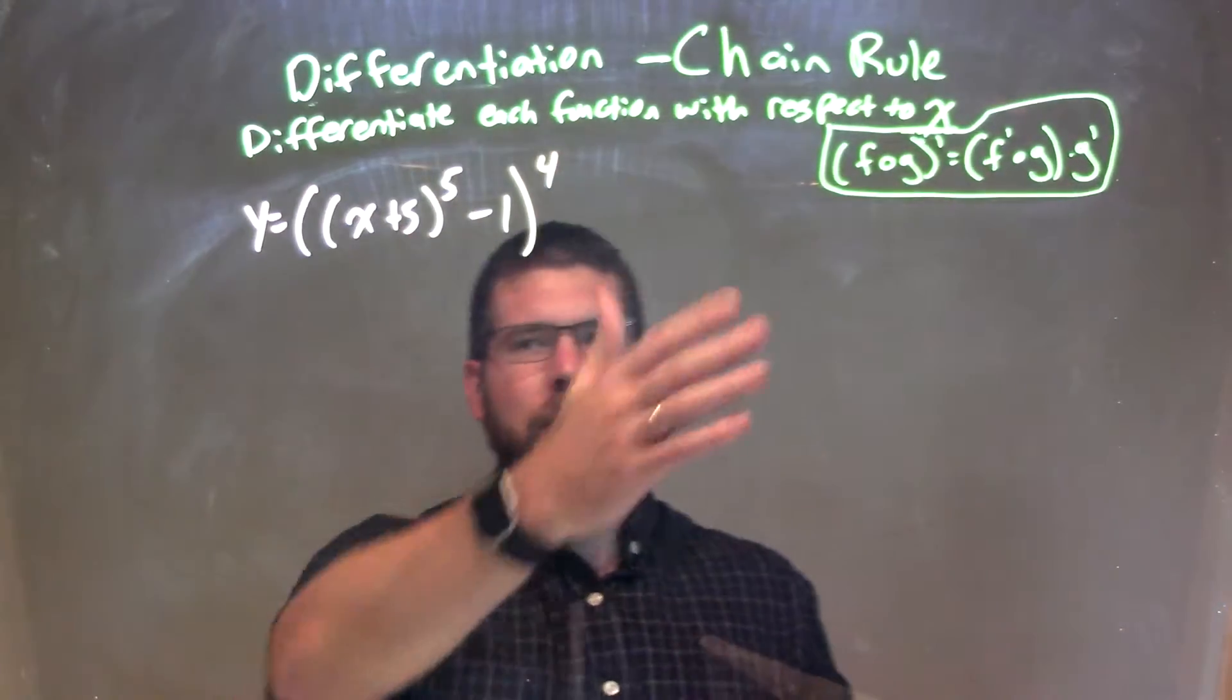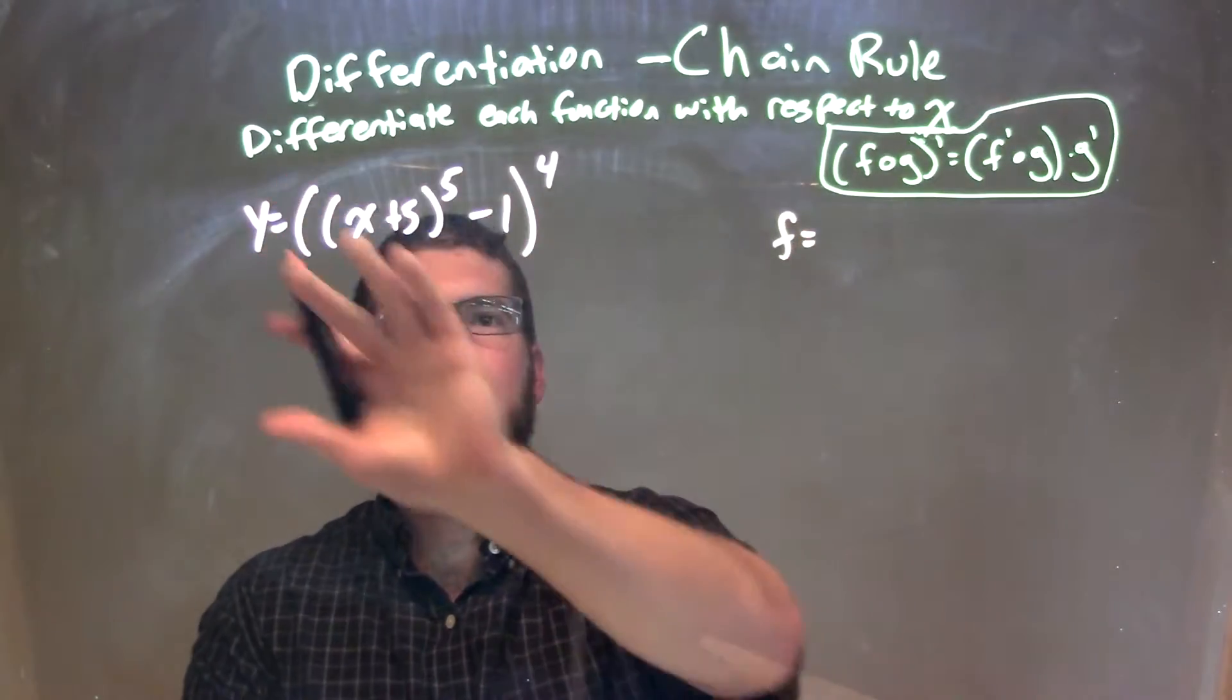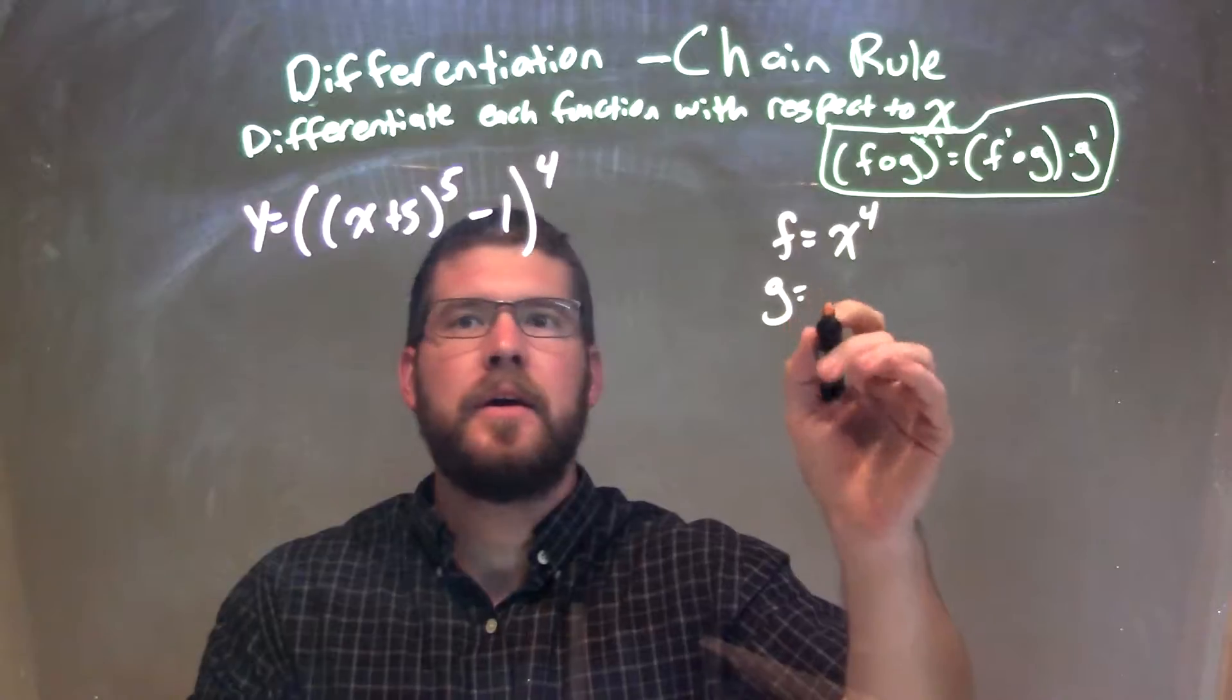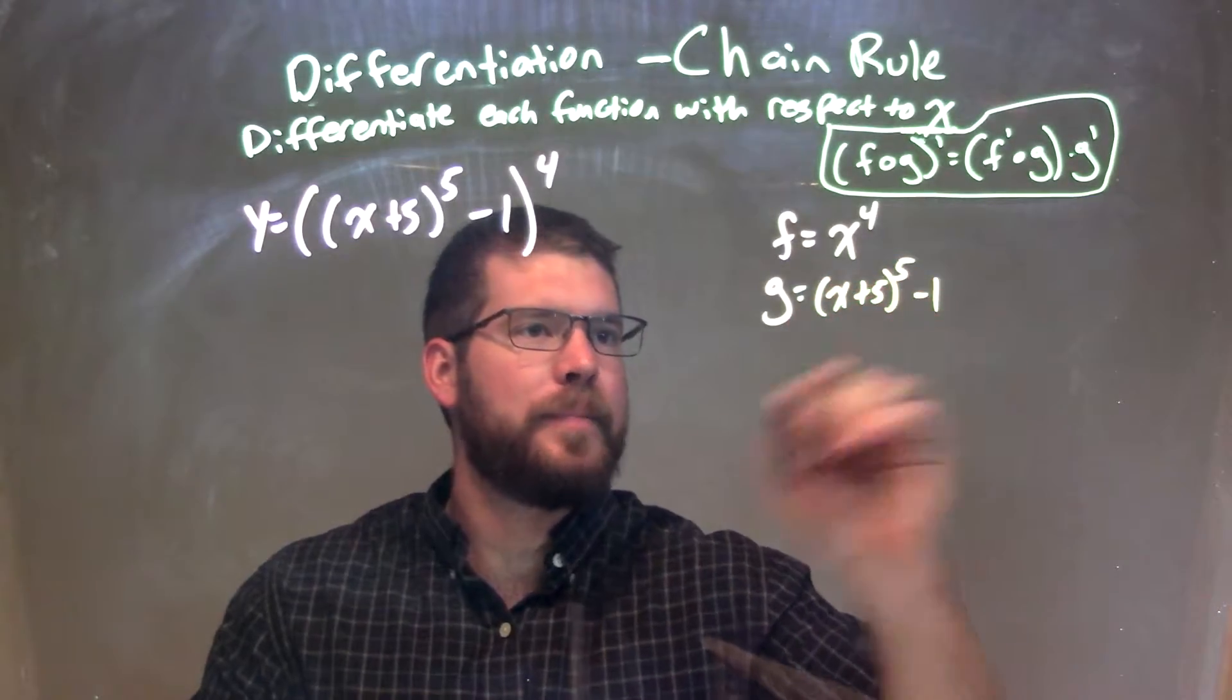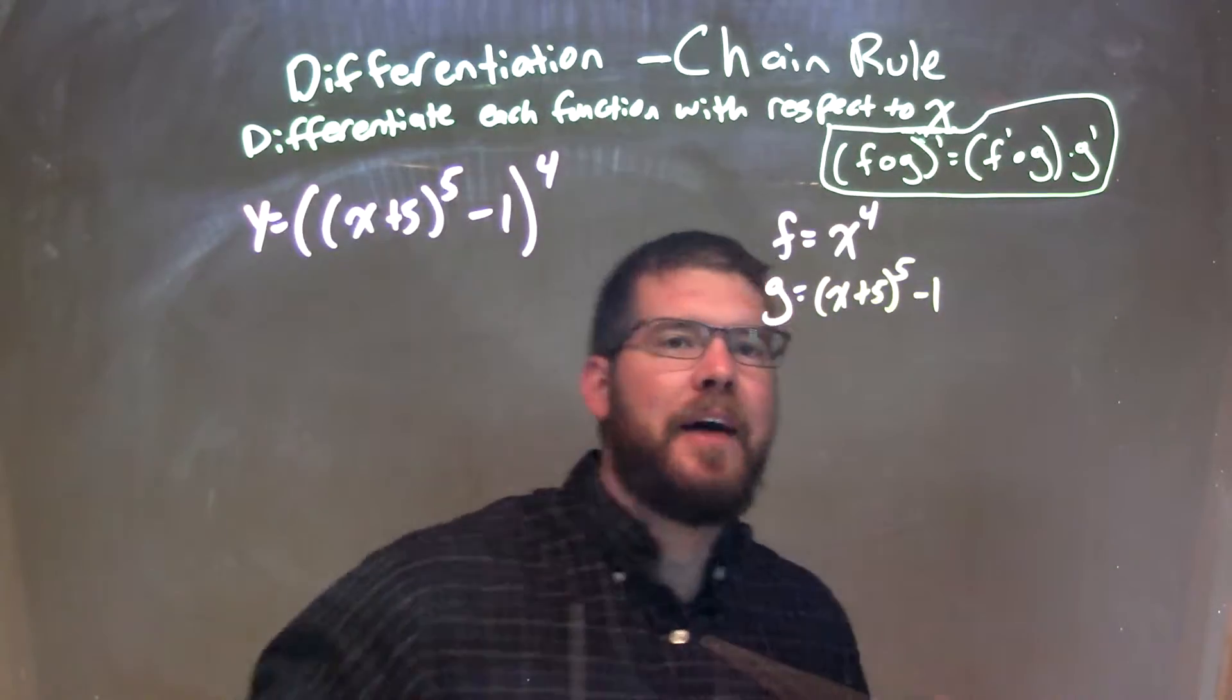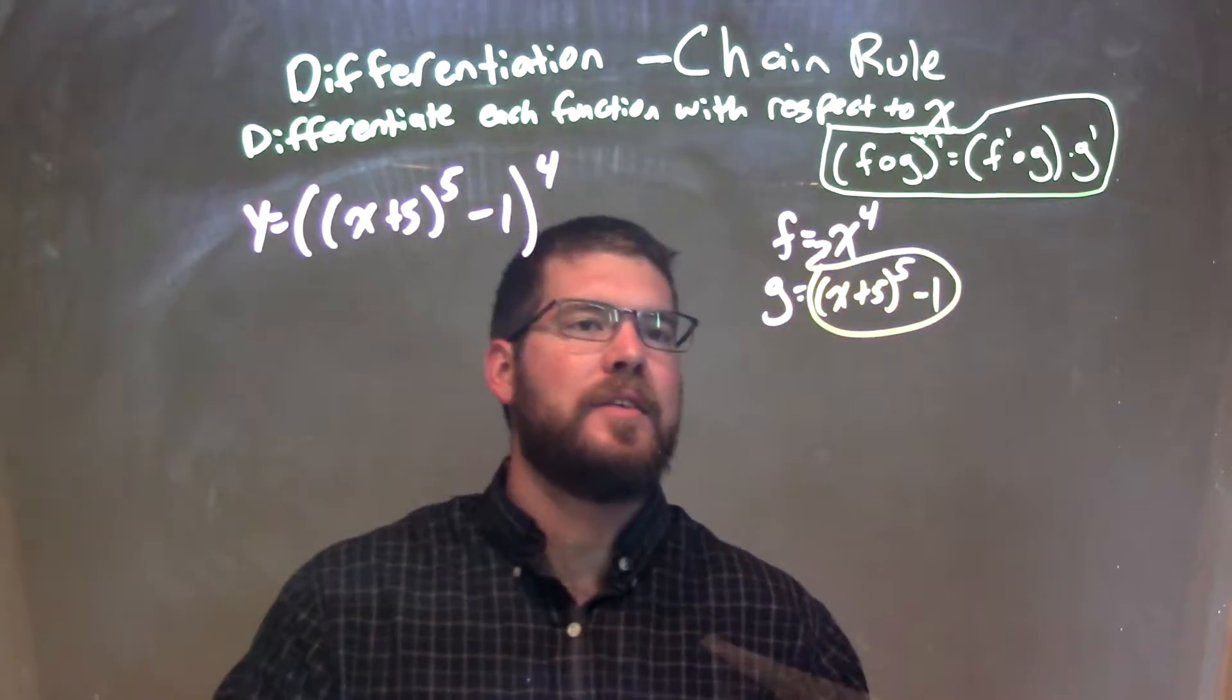So I can still write this as my f of g. So we have f, I can see this is kind of big parentheses, to the 4th power. And the inside, my g here, is x plus 5 to the 5th power, minus 1. So now we need to find, you can see this is my f of g. If I plug that in there, you can see how it's the f of g.